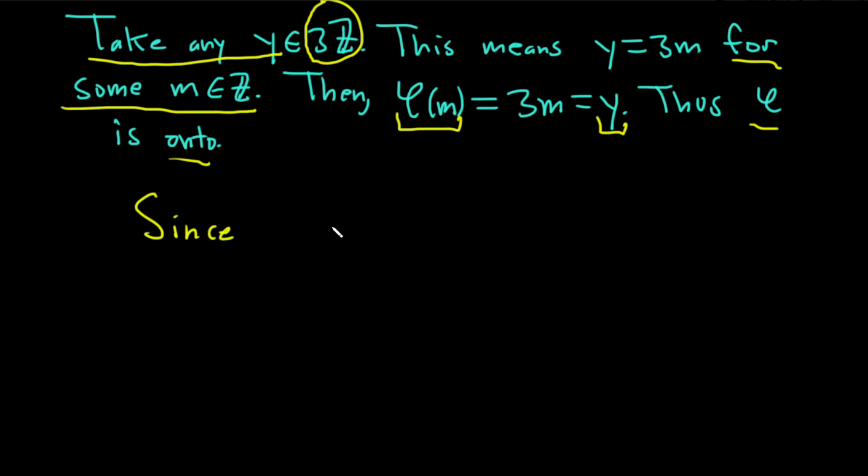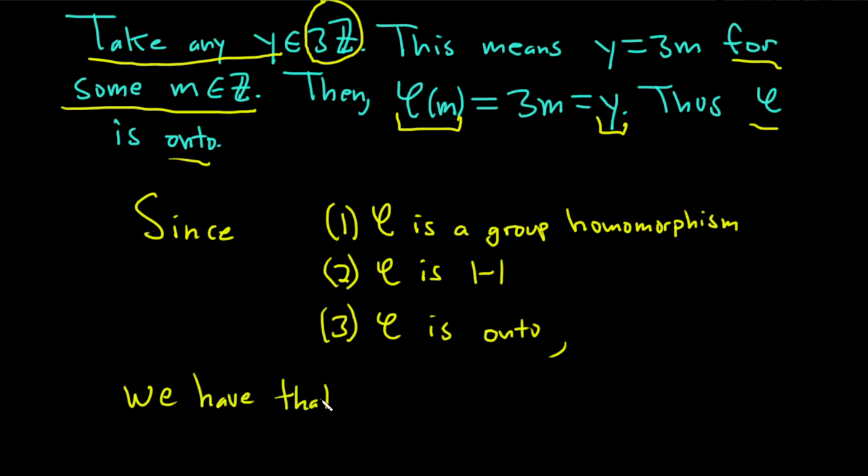Since one, phi is a group homomorphism, two, phi is one-to-one, three, phi is onto, we have that phi from Z into 3Z is an isomorphism.